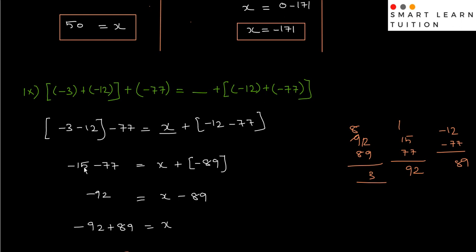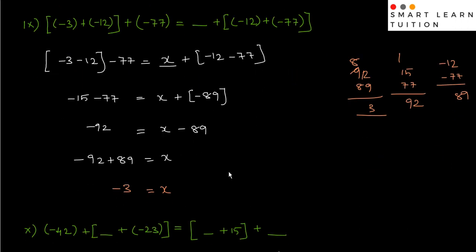So minus 15, then minus 77, equals to x. Open the bracket and solve. Add: minus sign. So minus 3 minus 12 equals minus 15. Then 15 plus 77 equals 92. So minus 92 equals to x.